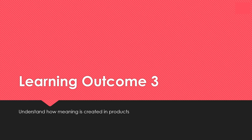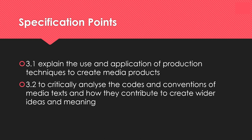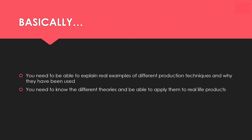This is learning outcome 3, which is understanding how meaning is created in products. According to the specification, you need to be able to explain the use and application of production techniques to create media products, and you need to critically analyse the codes and conventions of media texts and how they contribute to wider ideas and meaning. Basically, you've got to be able to explain real examples of different production techniques and why they've been used, and you need to know the different theories and be able to apply them to real life products.